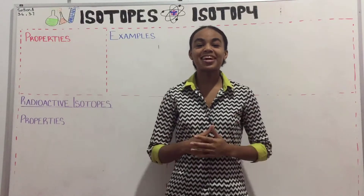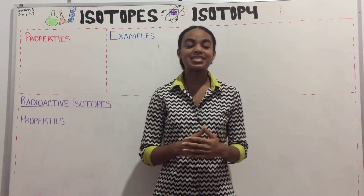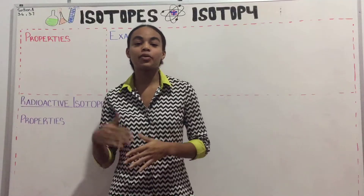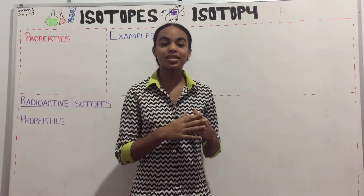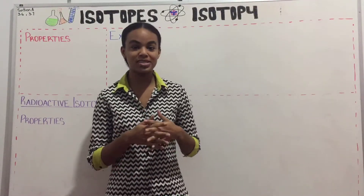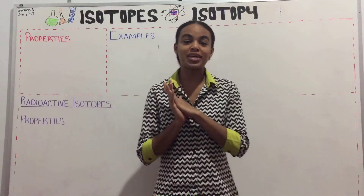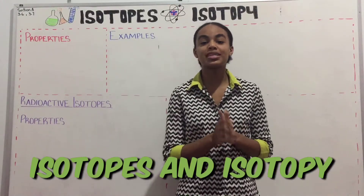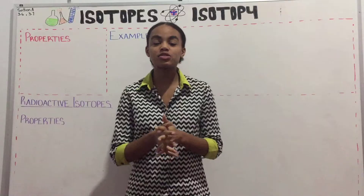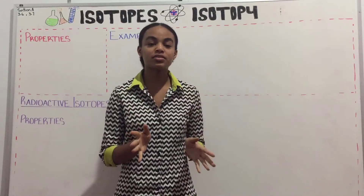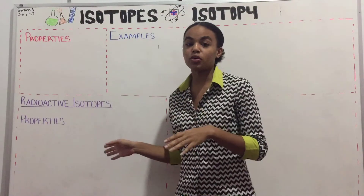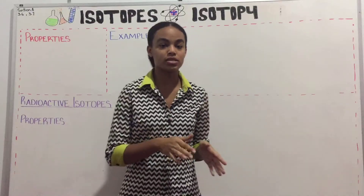Hey guys and welcome back to Caribbean Tudes. In this series we are looking at the chemistry syllabus. We are at section A and today we're doing 3.6 and 3.7, which is going to be isotopes and isotopy. We're going to define these two words, give examples of each, and then look at radioactive isotopes and their uses.